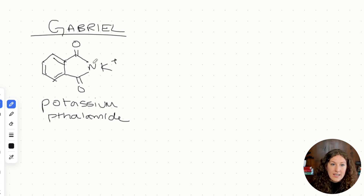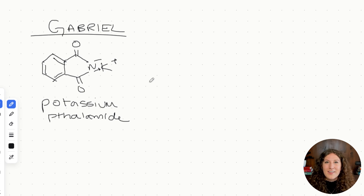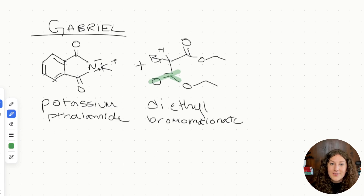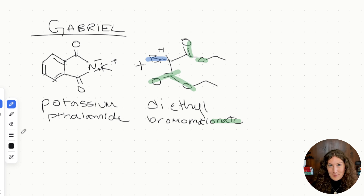The potassium becomes K+ and the nitrogen becomes N−. Whenever we have group one atoms like potassium or sodium, we're usually just using them to ionize in solution so we get the anion we want to react with. Here, our anion is on the nitrogen. Our second reactant is equally chunky with a long name: diethylbromomalonate. Key features: we have two ester groups — the suffix '-onate' means ester groups — both bound to ethyl groups. And then we have our bromine, which like all halogens is an excellent leaving group.